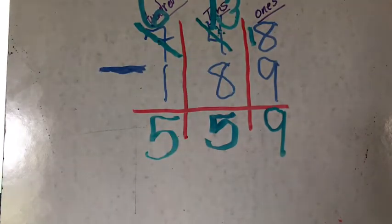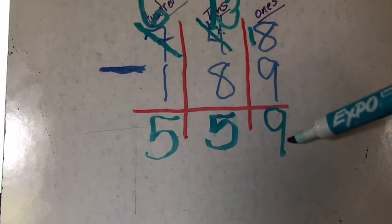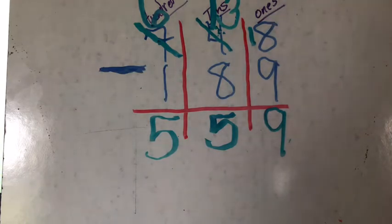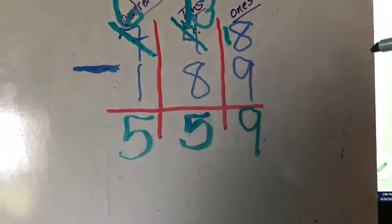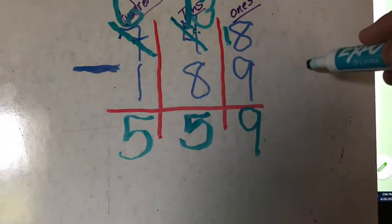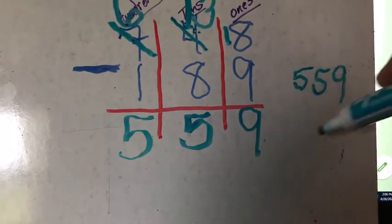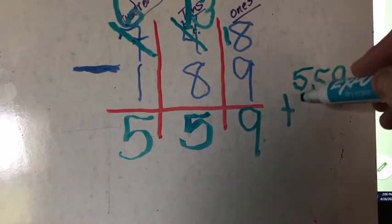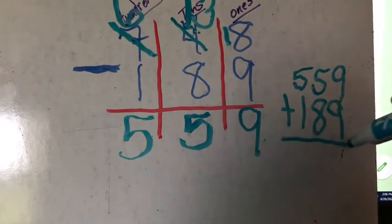So the answer to the problem is, she has 559 pencils left that are not broken. I can check this then and see if I take my broken ones and my non-broken, I should get back the 748. So I can do a quick check right at the side here. So I can take the 559, which is supposed to be my answer that are unbroken and I take my 189 broken. If I add those up,